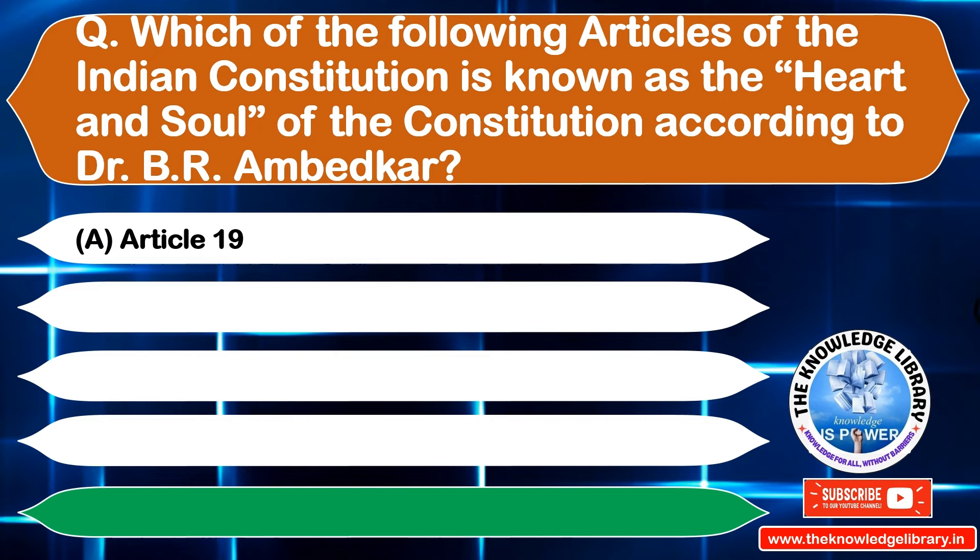The next question is: which of the following rights is available only to citizens of India? Option A: Right to Equality, Option B: Right to Freedom of Speech, Option C: Right to Life and Personal Liberty, Option D: Right to Protection Against Arbitrary Arrest. The correct answer is Option B: Right to Freedom of Speech.